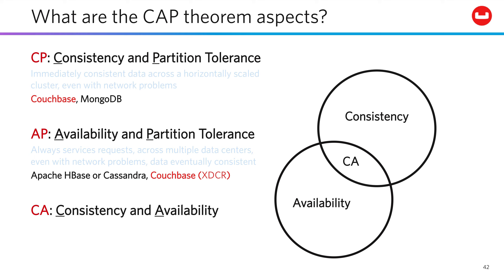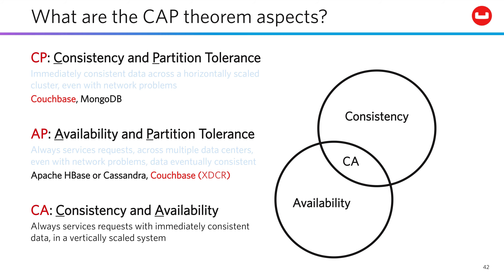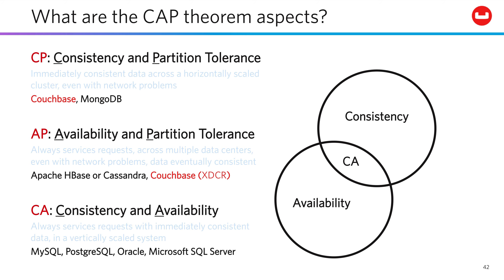If you choose a CA software design, meaning you're emphasizing consistency and availability, that means your software is scaling up on one big box, not out across a cluster. You will always get consistent data if you can talk to the database, as long as you've got a big enough box. The traditional relational systems all fall into this aspect.